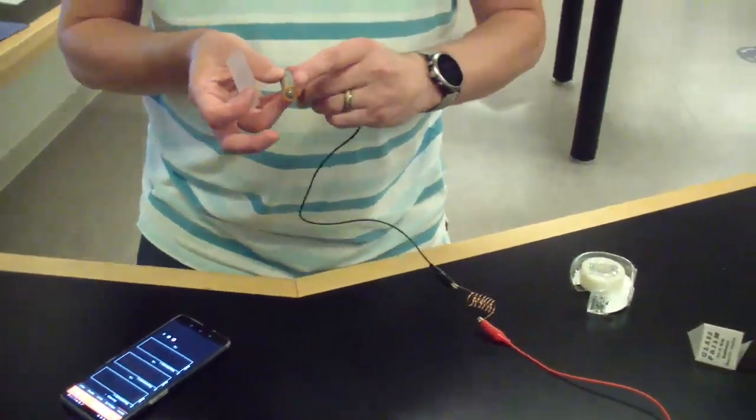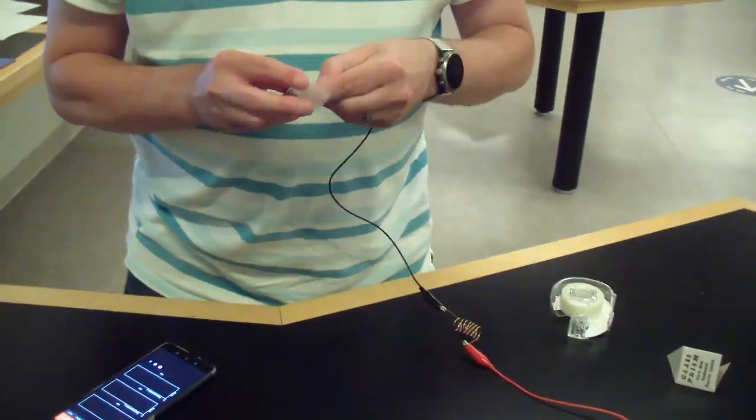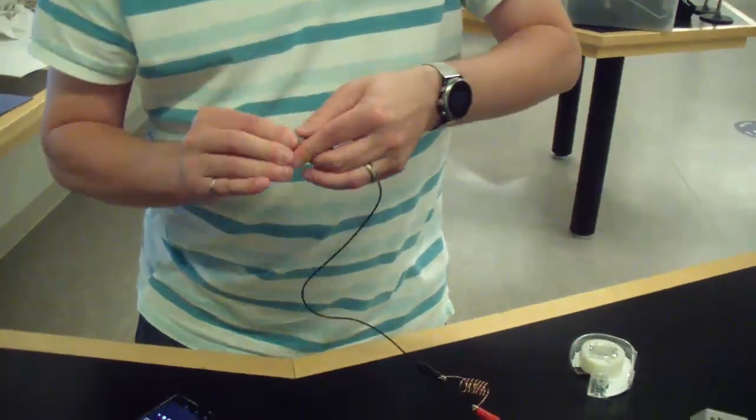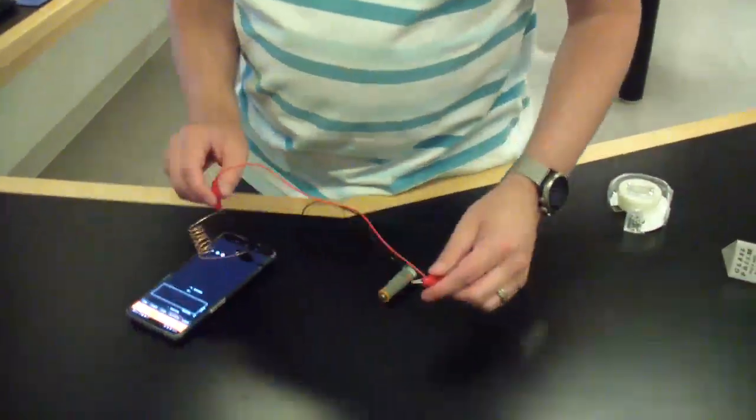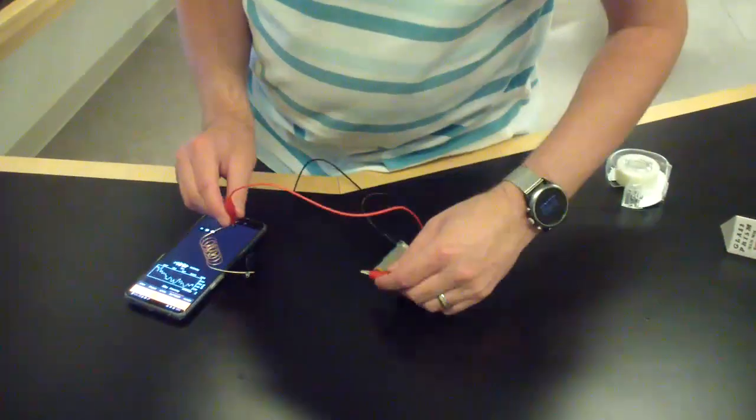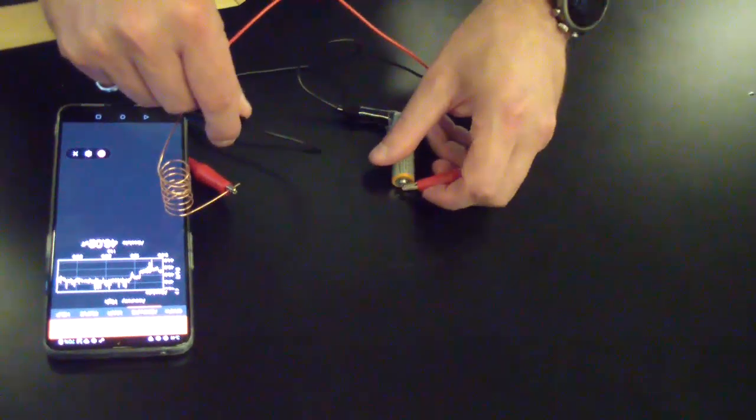Place the coil over your magnetometer. Start another Absolute Magnetometer measurement. Record for a few seconds to establish a background reading. Then tap the other clip to the other end of the battery 5 times. Make sure that you don't keep the circuit connected for long because it can heat up quite a bit.